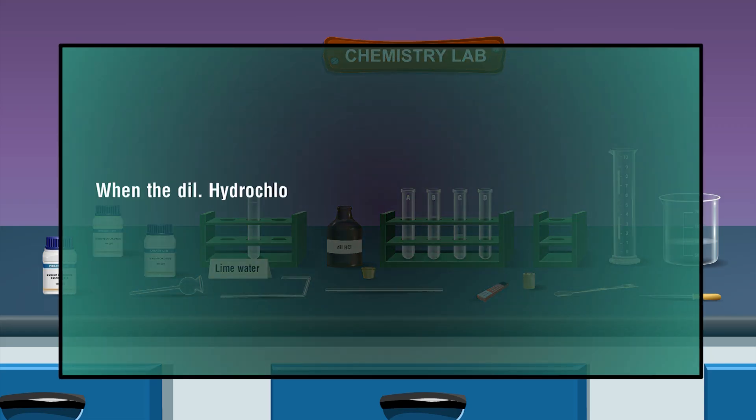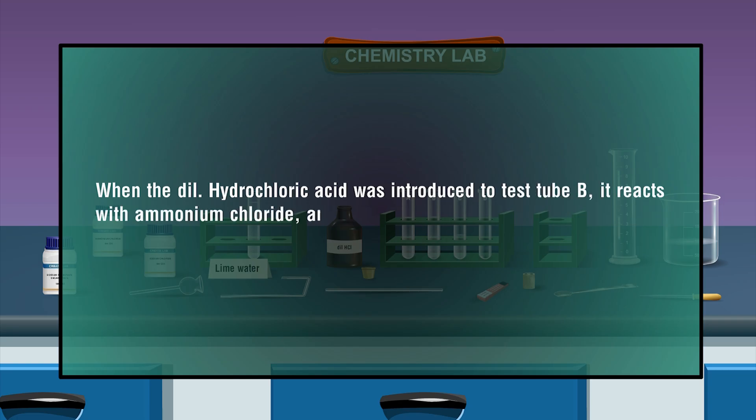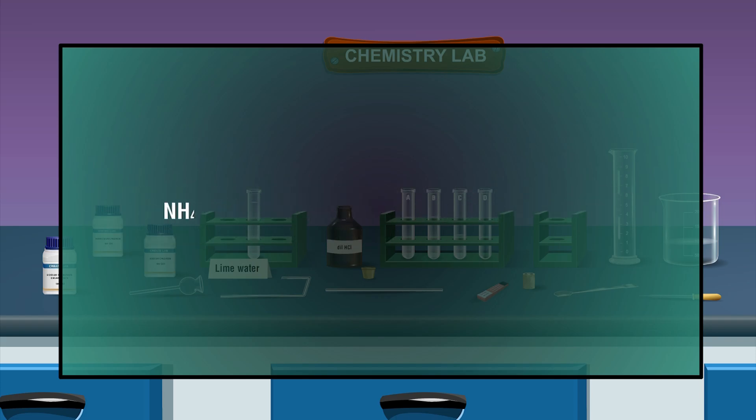When the dilute hydrochloric acid was introduced to test tube B, it reacts with ammonium chloride and the resultant will be ammonium chloride itself since it is a weak base. NH4Cl solid plus HCl aqueous gives NH3 gas plus H2O liquid plus HCl gas.